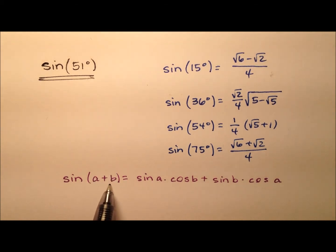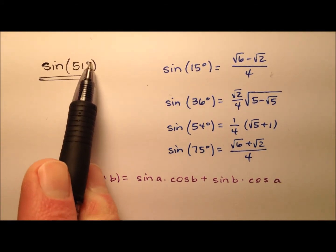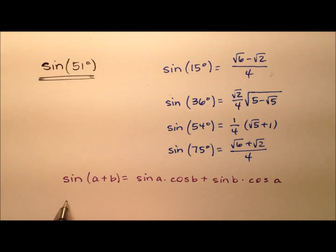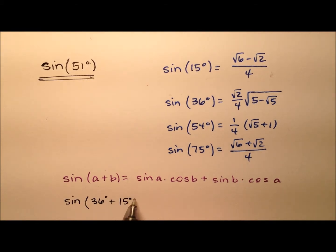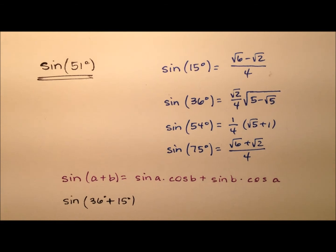So we need to come up with two angles, a and b, that add up to 51 degrees. And so we're going to go ahead and use the sine of 36 degrees and 15 degrees — 36 plus 15 does indeed add up to 51 degrees.